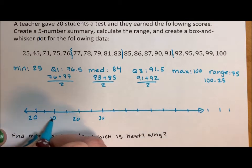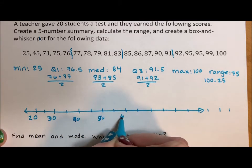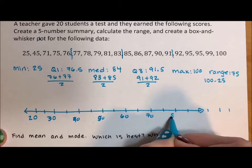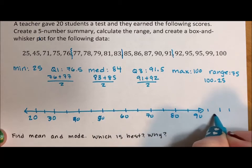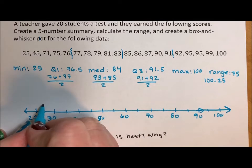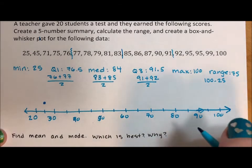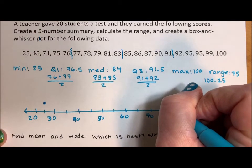Let's make this 20, 30, 40, 50, 60, 70, 80, 90, 100. That will work. This is why erasers are good. This is why we don't do math in pen. The minimum is 25. First quartile is 76.5, which is all the way up here.